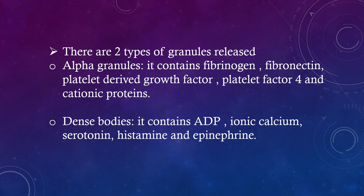There are two types of granules released. Alpha granules contain fibrinogen, fibronectin, platelet-derived growth factor, platelet factor 4, and cationic proteins. Dense bodies contain ADP, ionic calcium, serotonin, histamine, and epinephrine.